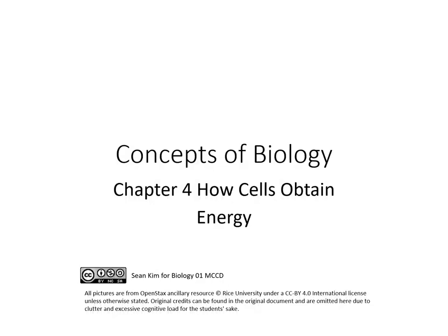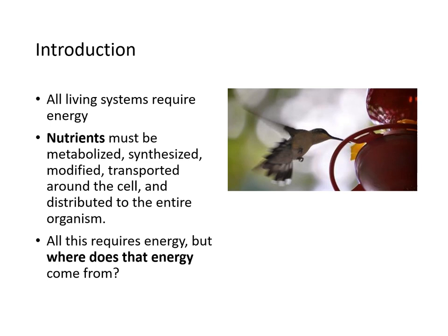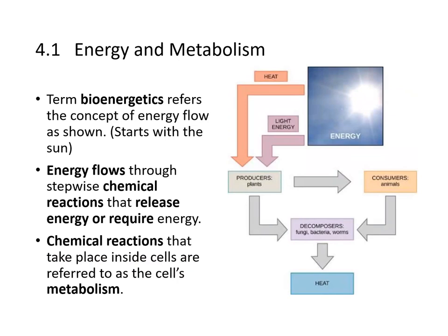We'll be discussing concepts of biology, chapter 4: how cells obtain energy. All living systems require energy, and the nutrients must be metabolized, synthesized, modified, transported around the cell, and distributed through the entire organism. All this requires energy, but where does it come from? It comes from the Sun ultimately. The term bioenergetics